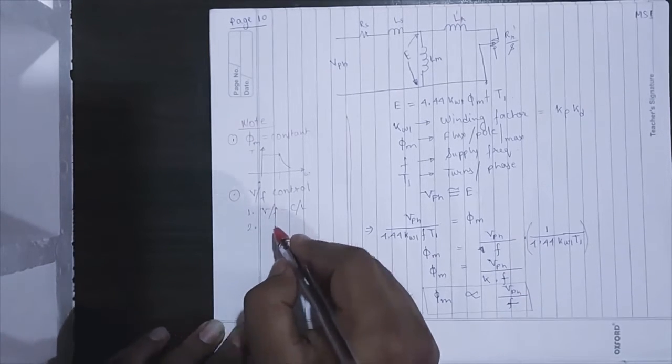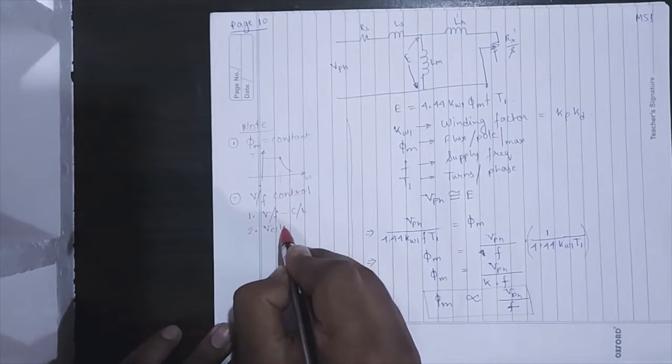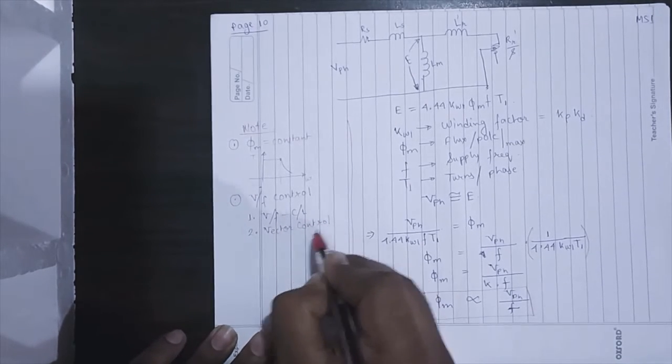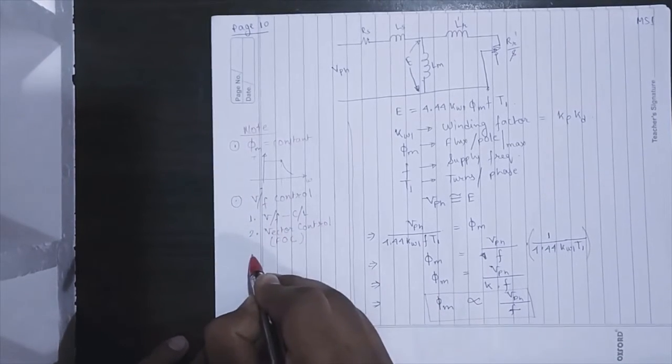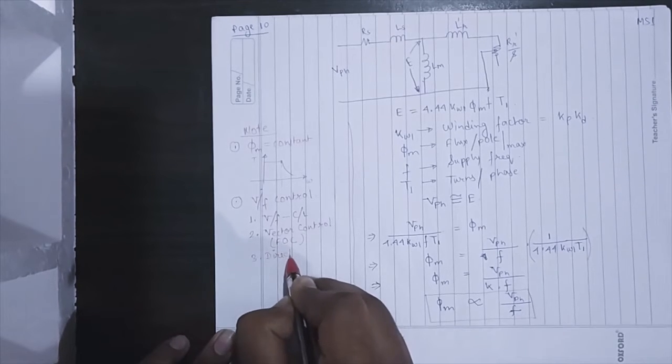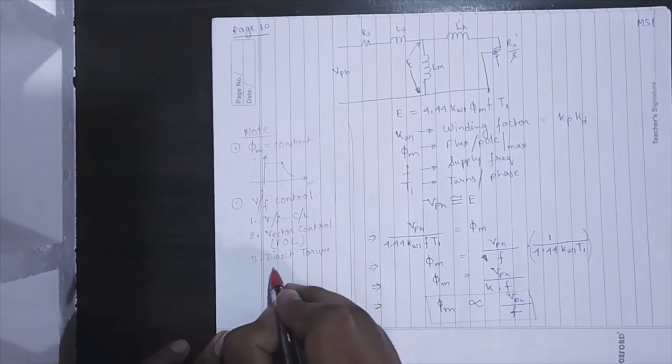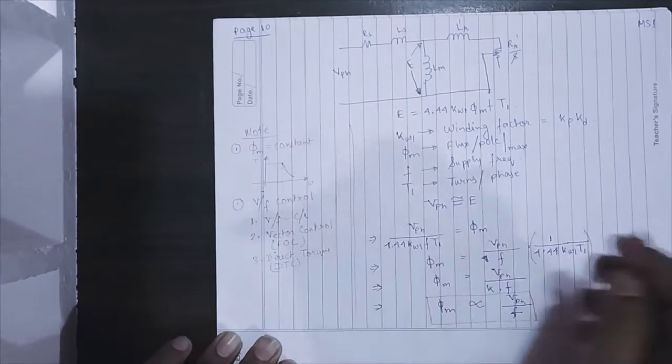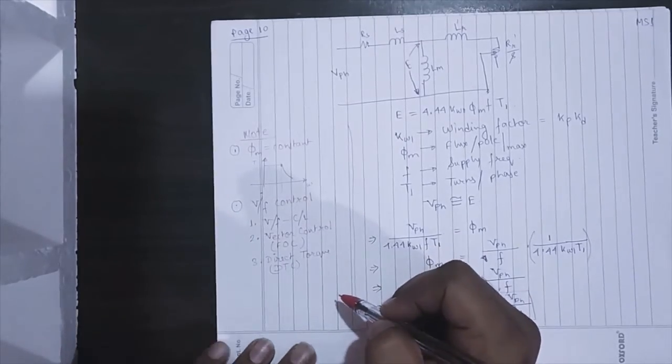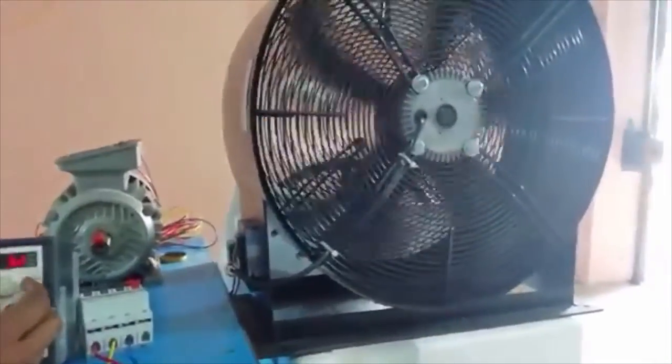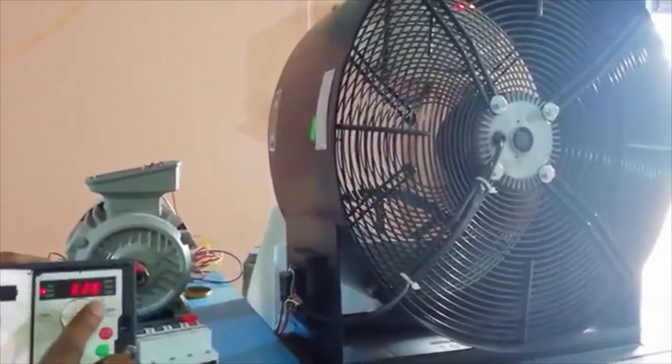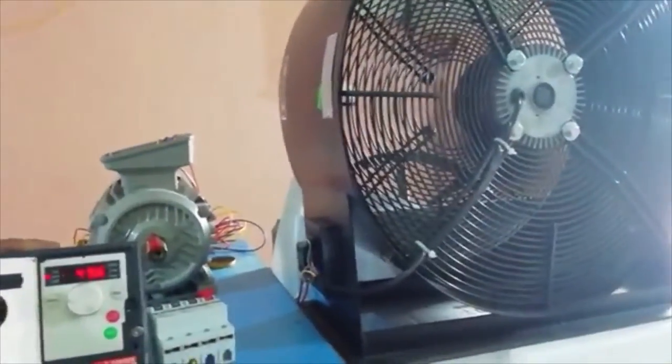Vector control is another controlling method, a speed controlling method for both induction machine and synchronous machine. Another thing is direct torque control or DTC. This is also one of the methods of controlling the machine.